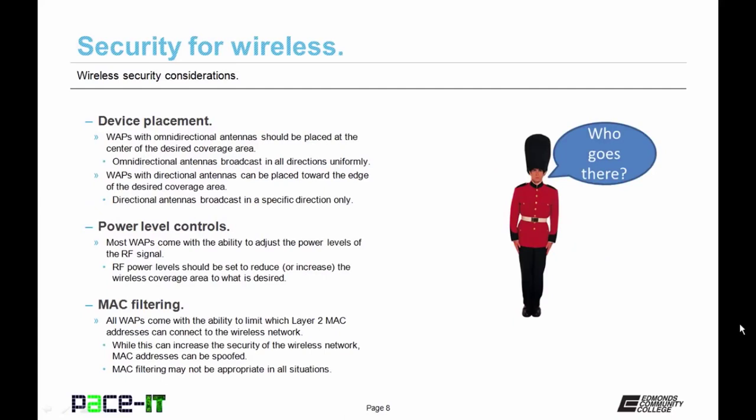Then there's device placement. Wireless access points with omni-directional antennas should be placed in the center of the desired coverage area, as omni-directional antennas broadcast in all directions uniformly. If placed on the edge of the desired coverage area, you will be placing your wireless signal where it shouldn't belong. Wireless access points with directional antennas can be placed toward the edge of the desired coverage area, since directional antennas broadcast in a specific direction only. Then there are power level controls.